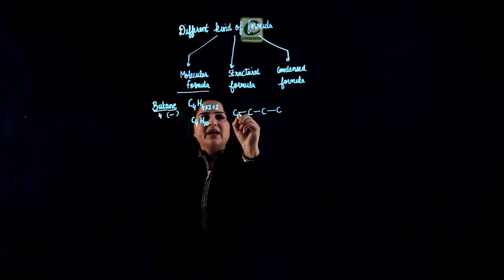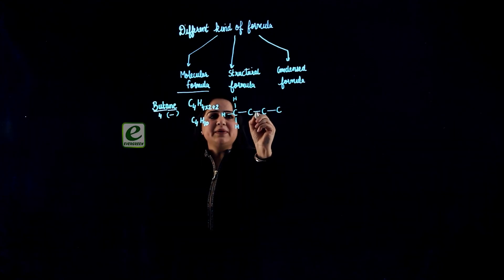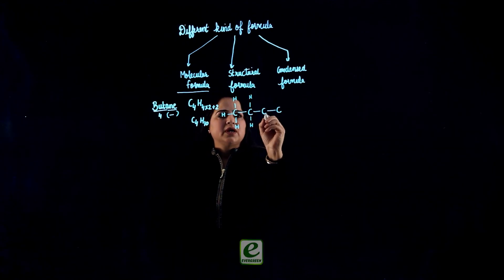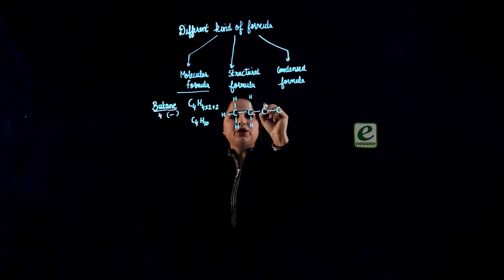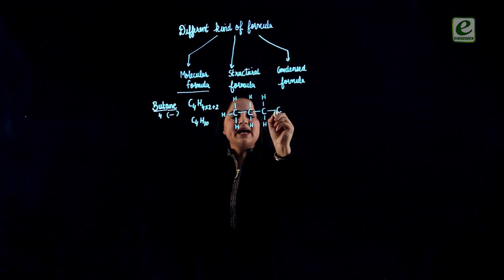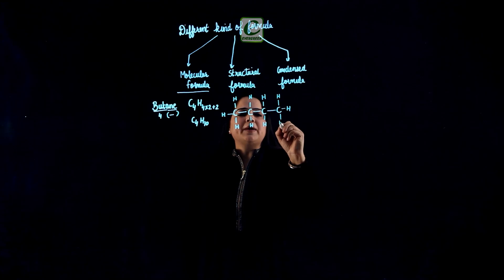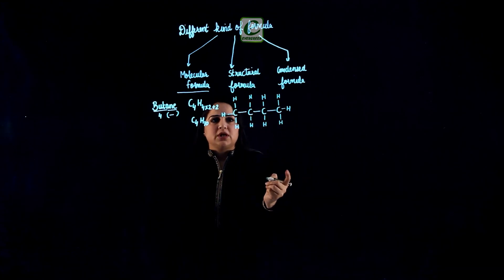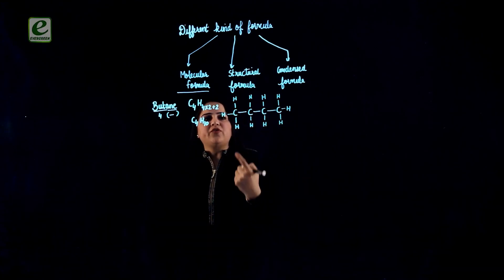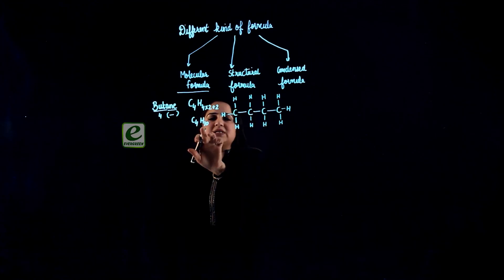If one carbon is associated with one bond, it needs to have 3 more hydrogens. The second carbon is associated with 2 bonds, so it needs 2 more hydrogens. The third carbon is bonded with 2 bonds, it needs 2 more hydrogens. The last carbon has got only 1 bond, so it needs 3 more hydrogens in order to complete the 4 bonds. The structural formula is obtained by writing down the complete structure of the compound.